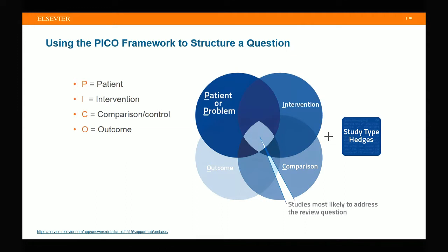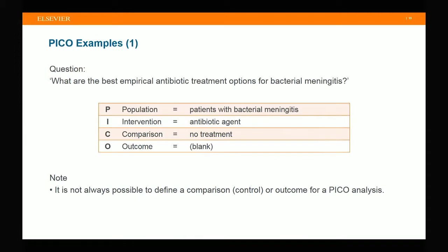Let's look at a few examples of slicing a clinical question using PICO. First question: 'What are the best empirical antibiotic treatment options for bacterial meningitis?' In this question, P is the patient with bacterial meningitis; I is the antibiotic treatment or antibiotic agent; C — we do not see any comparison in this question, so we can consider there is none; and O, since it's asking what's the best treatment, can also be considered blank. It's not always possible to define a comparison or an outcome for a PICO analysis — sometimes you can only fill in one or two elements.